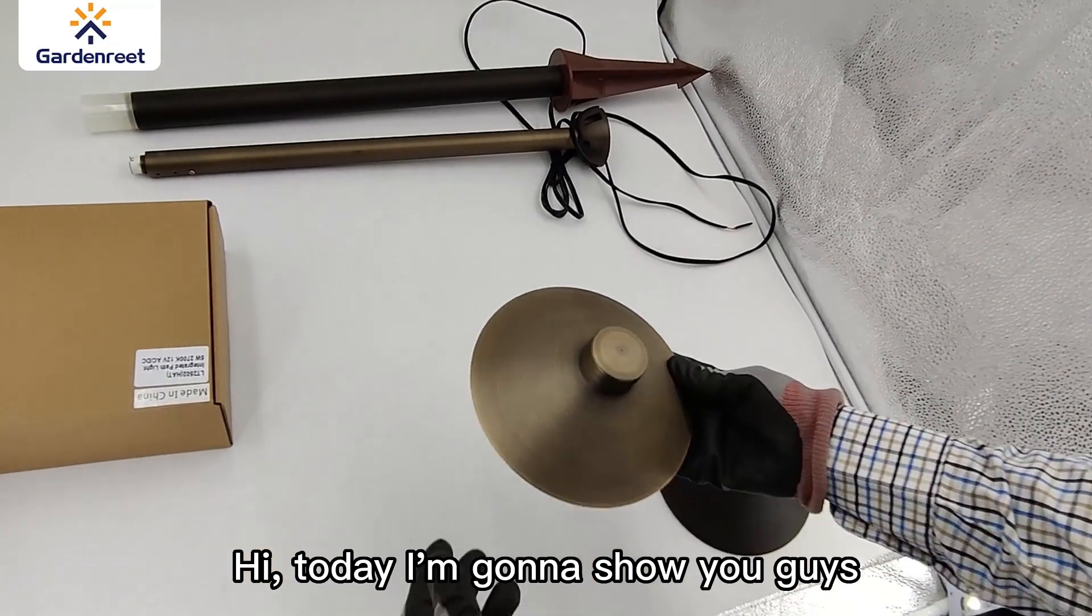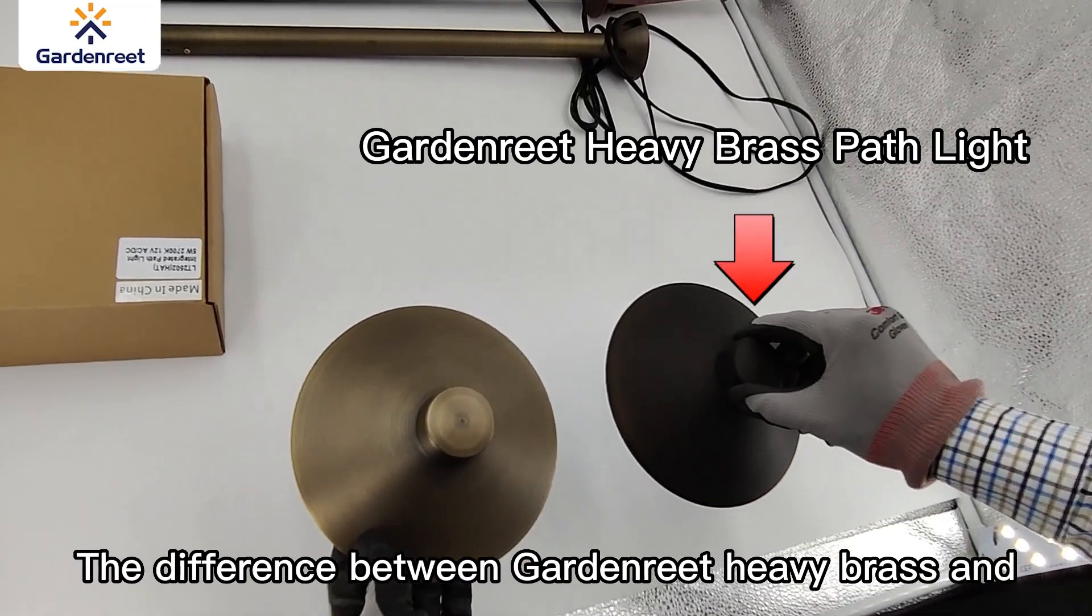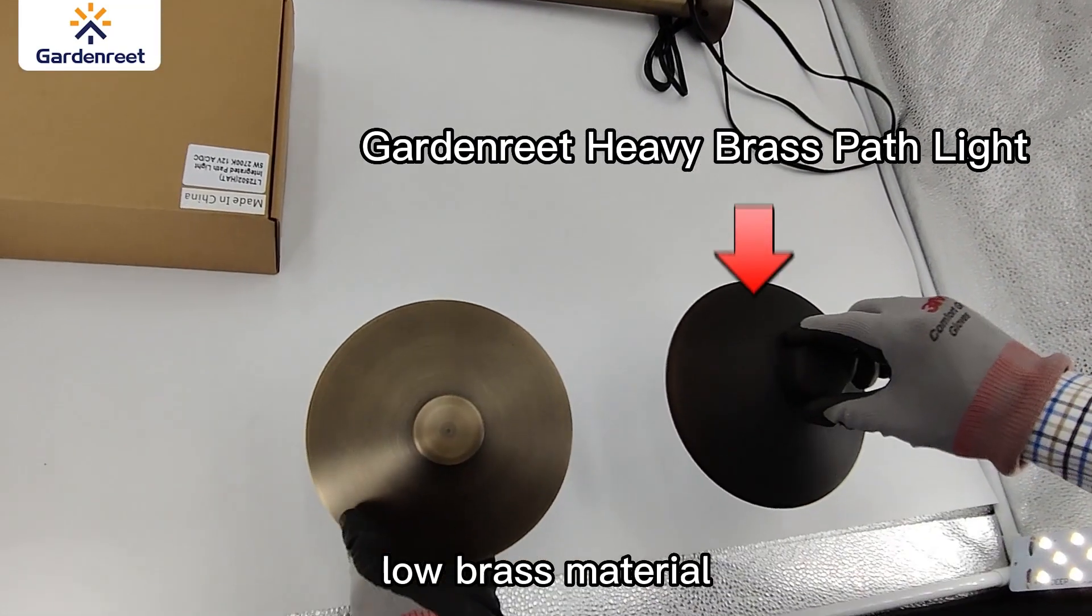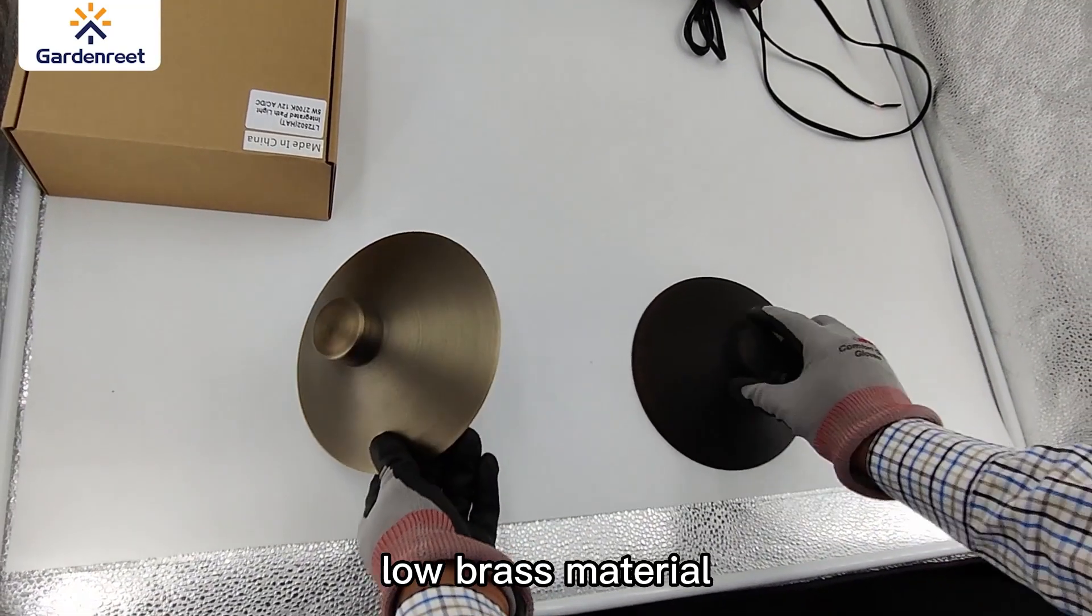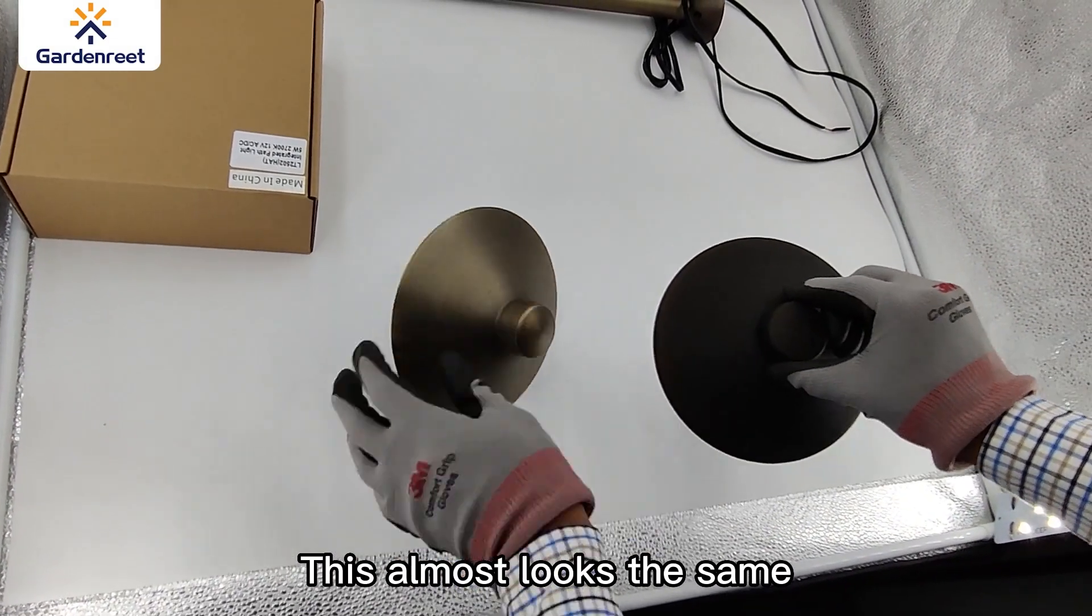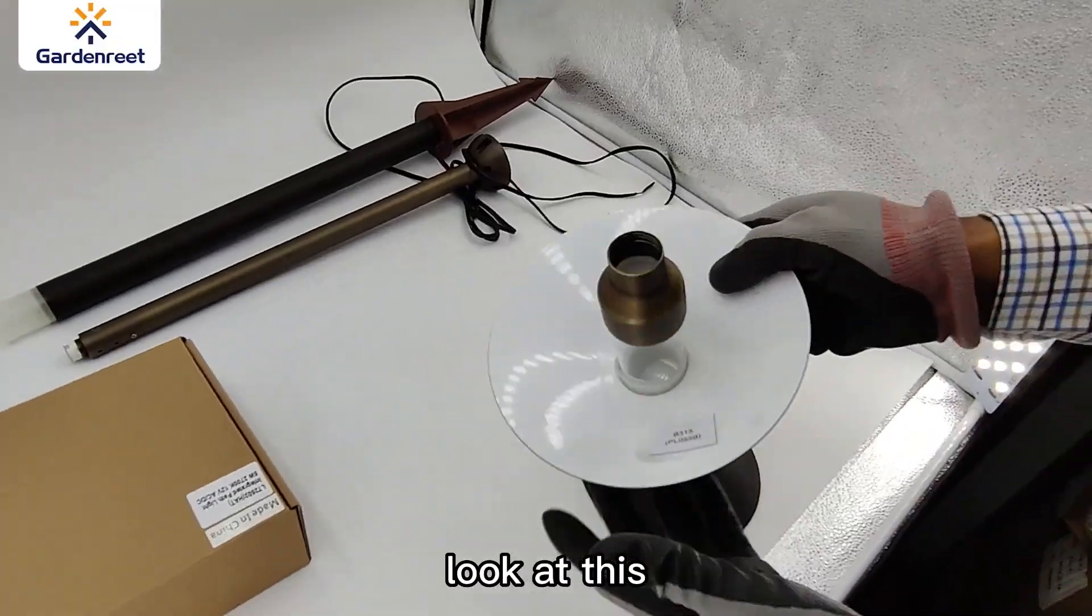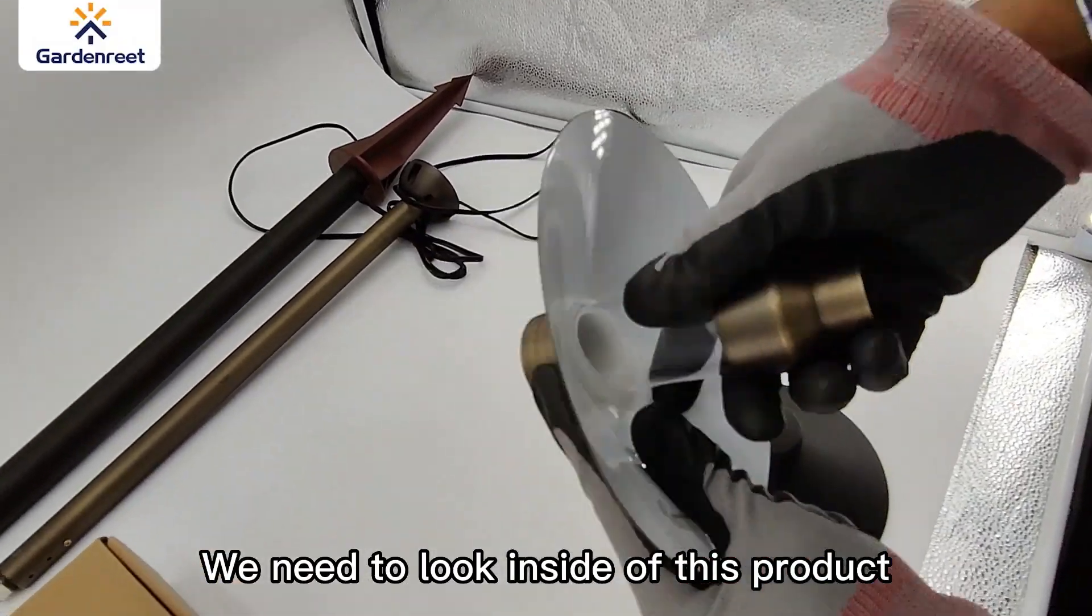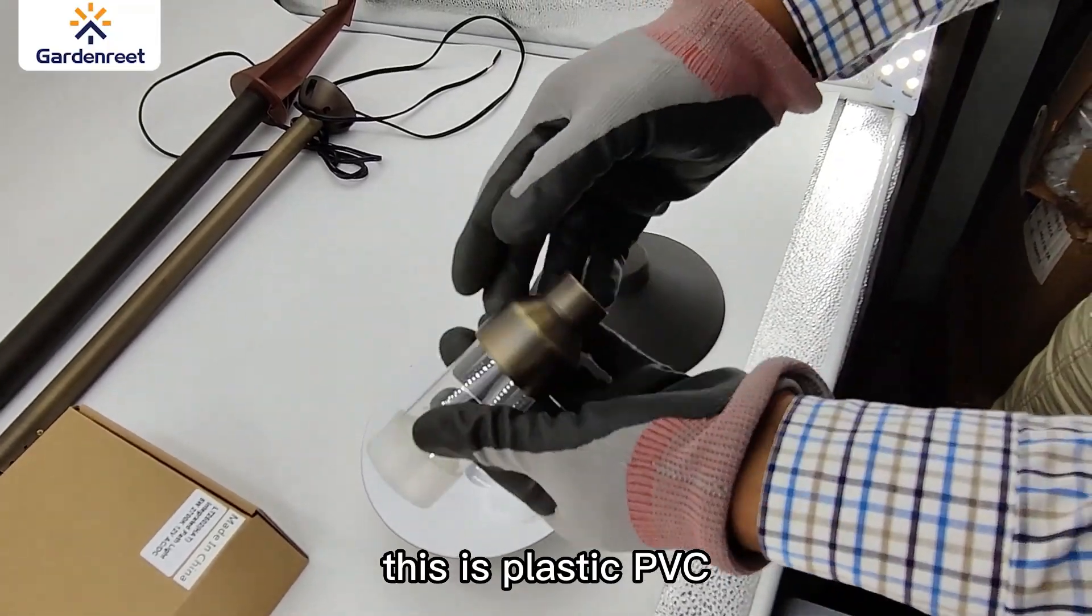Hi, today I'm going to show you guys the difference between heavy brass and low brass metal. This almost looks the same, you can see. We need to look inside of this product. This is plastic PVC and brass.